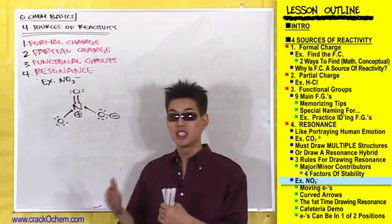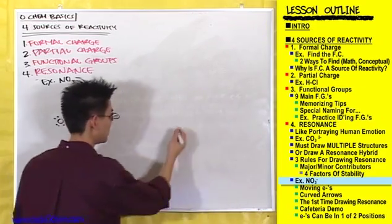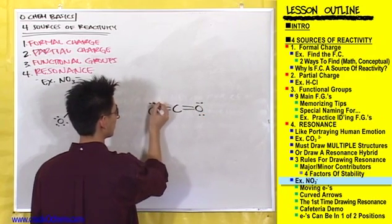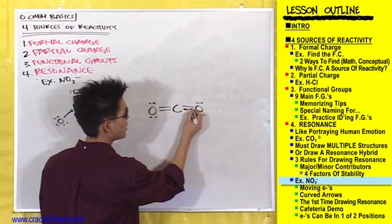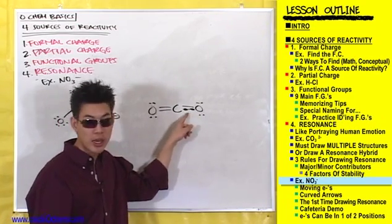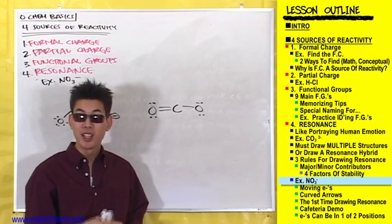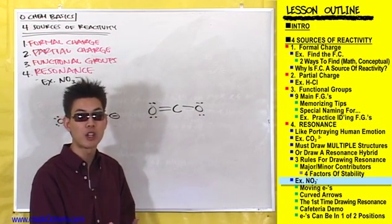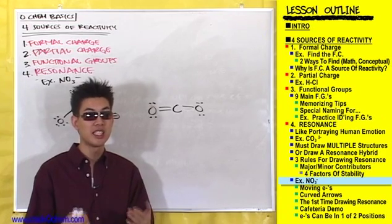We can rearrange these electrons because it doesn't change the overall connectivity of the compound. For example — don't write this down — CO2 looks like a carbon double bonded to two oxygens. There are two electrons in that multiple bond shared between carbon and oxygen. If you broke that double bond, the carbon would still be connected to the oxygen. That's why you can move electrons in lone pairs or multiple bonds — it doesn't change connectivity.